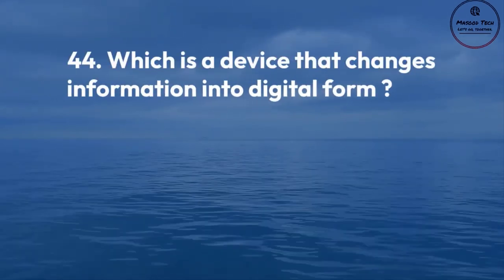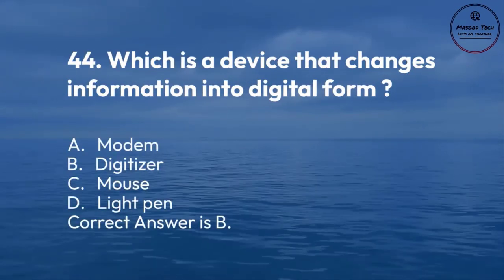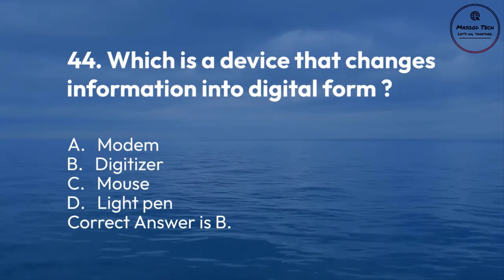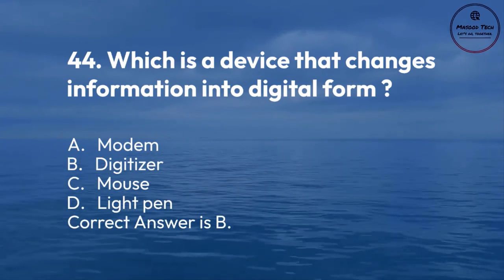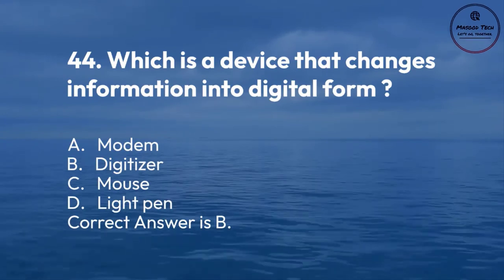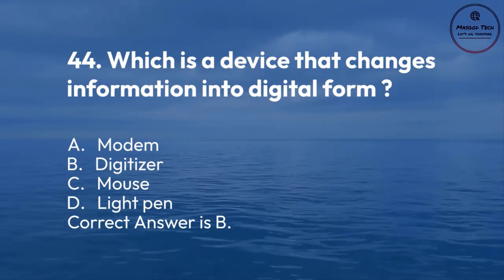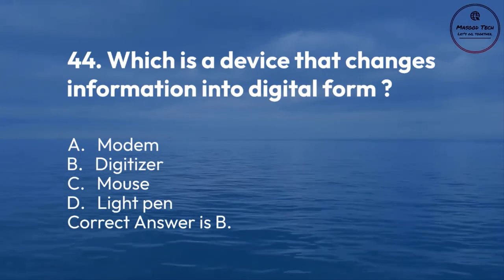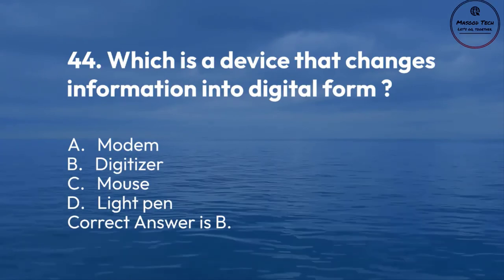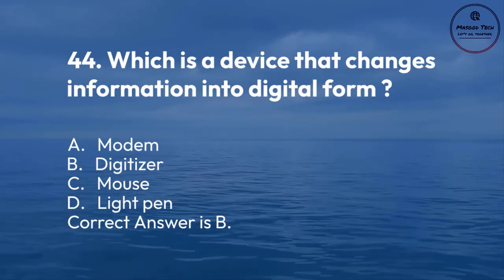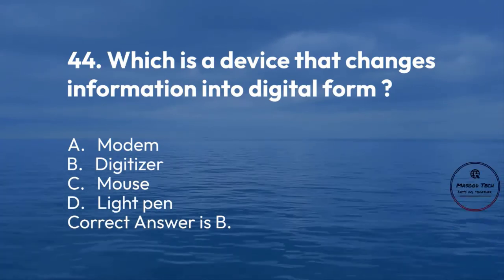Number 44. Which is a device that changes information into digital form? A. Modem. B. Digitizer. C. Mouse. D. Light pen. Correct answer is B.